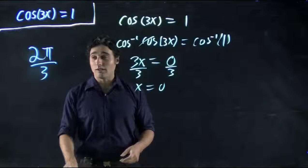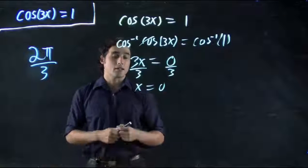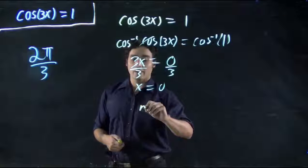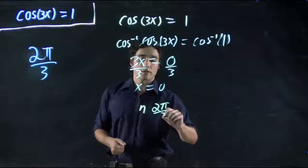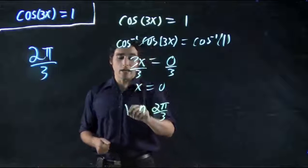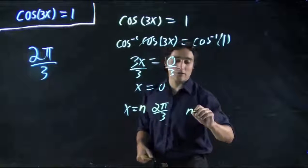And we can think, once again, that every, let's go back to this color, n, in this case, 2π over 3 is what x is going to equal. Because when it's 0, again, n is an integer.